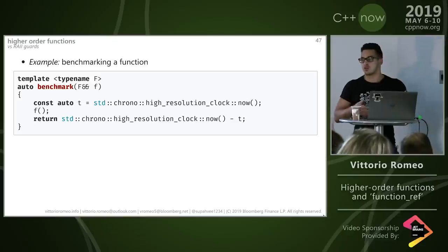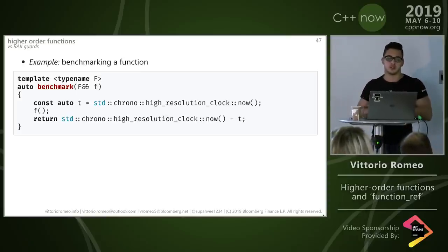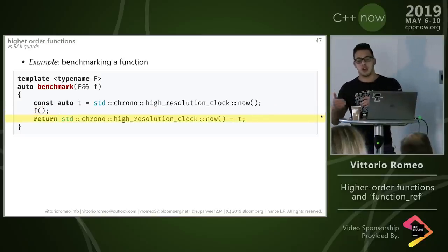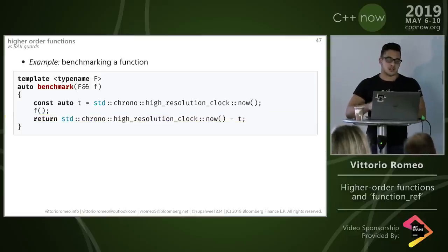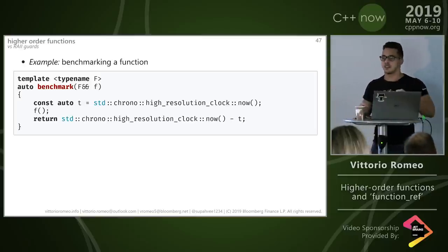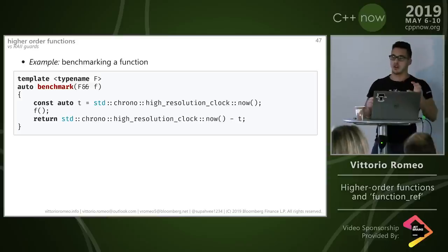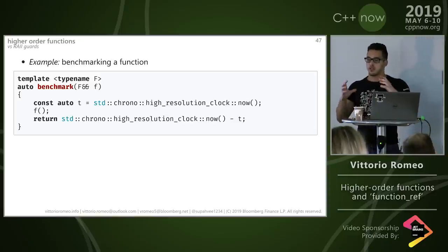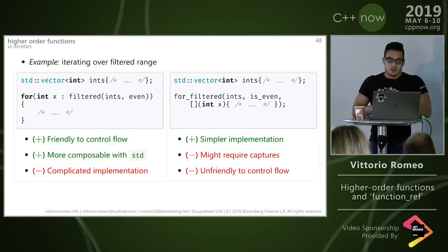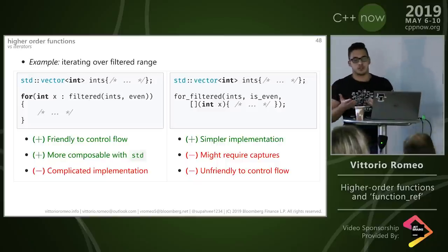A similar use case is benchmarking a function. A quick and dirty way is using chrono: get the time before calling the function, invoke f, then calculate time elapsed by subtracting. Obviously this isn't very statistically accurate but proves a point in code reviews. You can implement this either as a guard that measures time on construction and prints on destruction, or as a function that accepts an action, gets the time, invokes the action, and returns the elapsed duration.